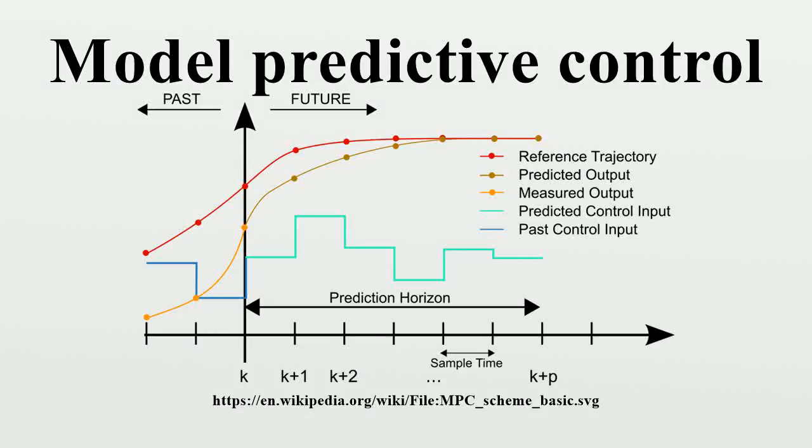Model predictive control is an advanced method of process control that has been in use in the process industries in chemical plants and oil refineries since the 1980s.